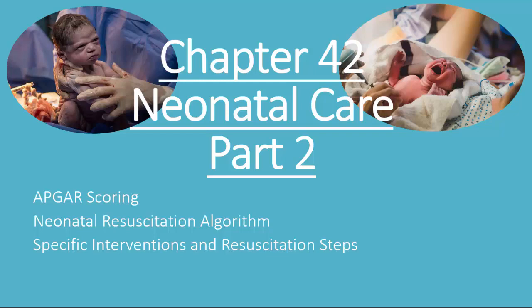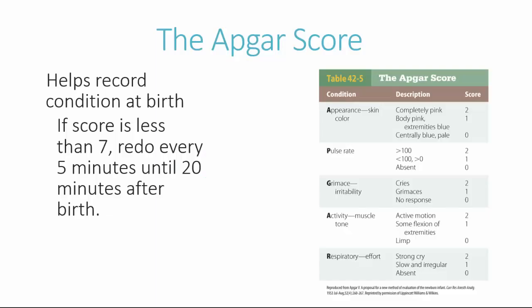The first thing we're going to talk about is the Apgar score. The Apgar score was developed by Dr. Virginia Apgar in 1953, and this tool helps record the newborn's condition in the first few minutes after birth. After birth, you would want to get a one-minute Apgar score and then a five-minute Apgar score. It measures in five different categories, which conveniently also form the mnemonic for Dr. Apgar.